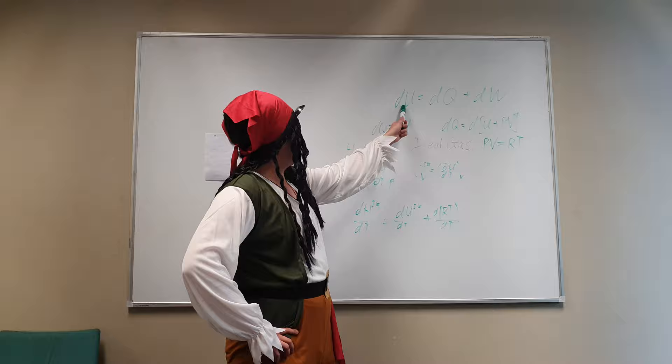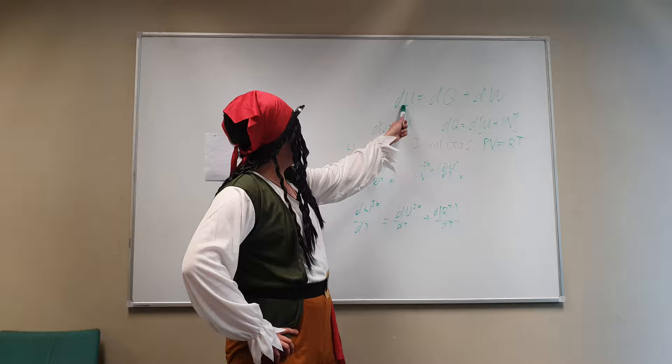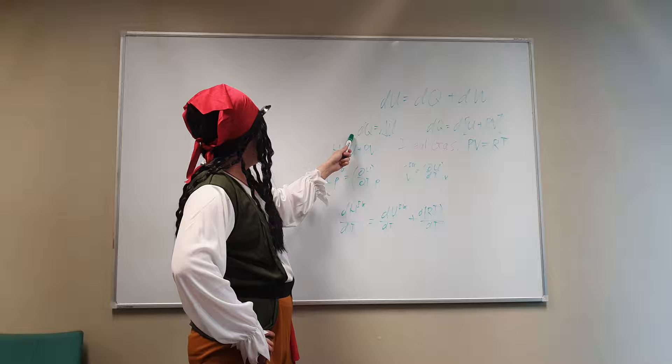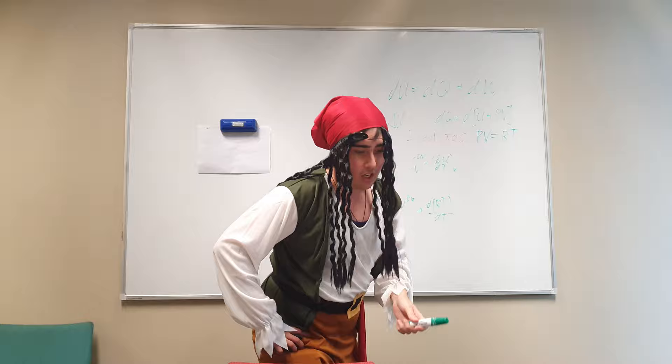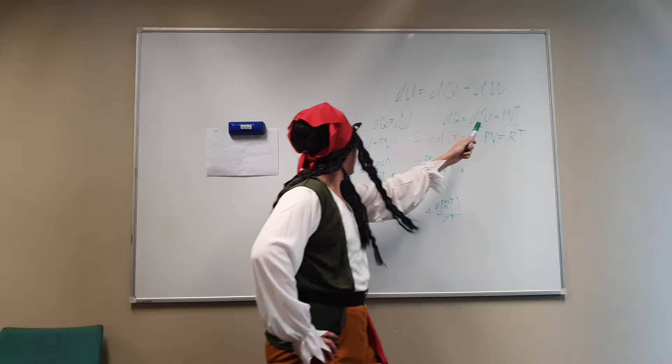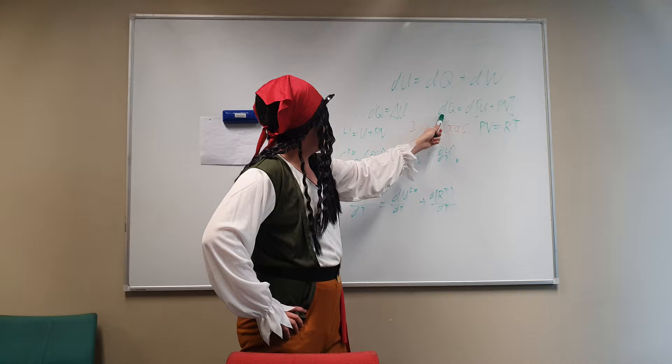In any reversible process of thermodynamics, the internal energy, the change in heat, and the change in work are all related by this general equation. Now, in an isochoric step, the change in heat is actually equal to the change in internal energy. Coincidentally, if we're dealing with an isobaric step, the change in heat is equal to the change in internal energy plus the change in pressure and volume. And if you look very closely, this is actually the enthalpy. So the change in heat is equal to the change in enthalpy.